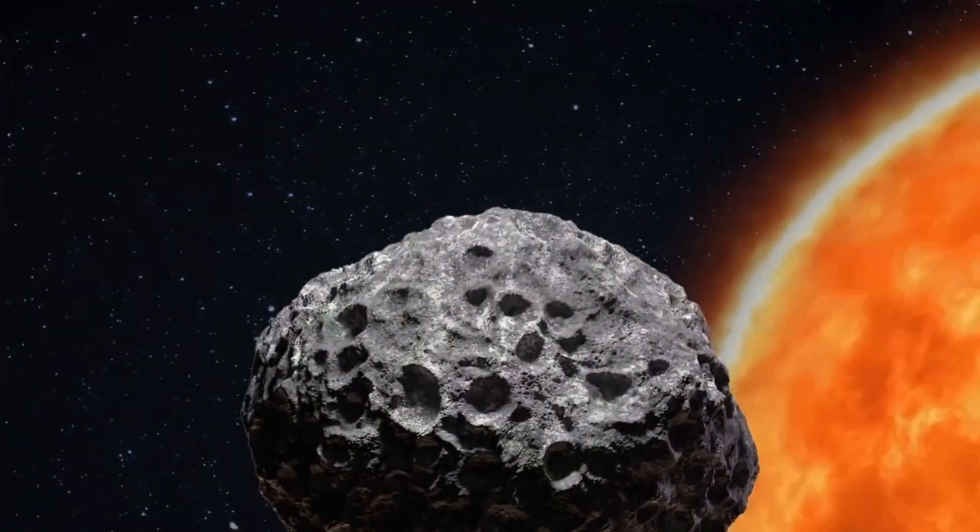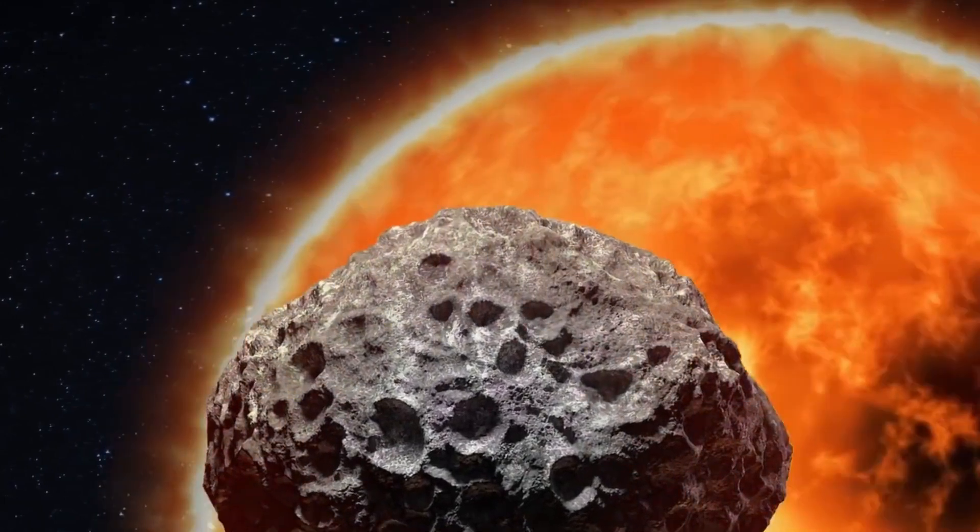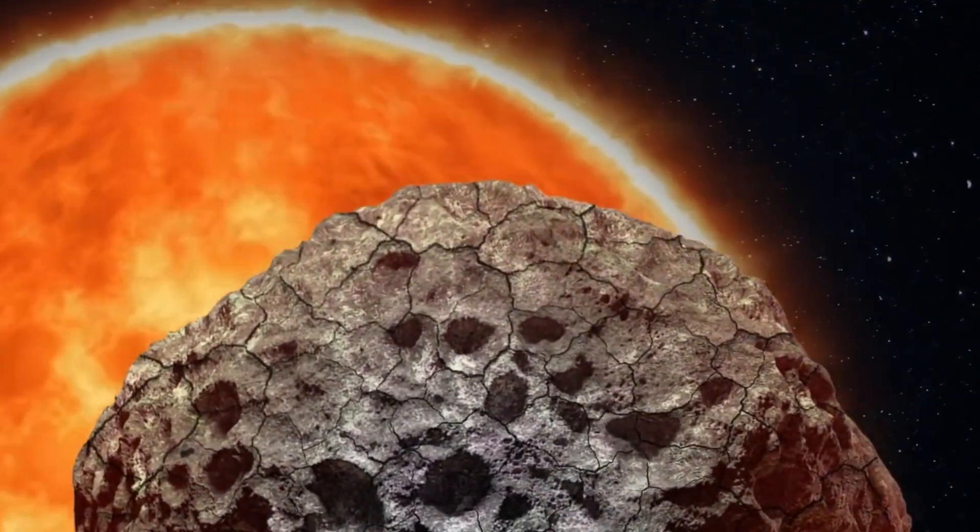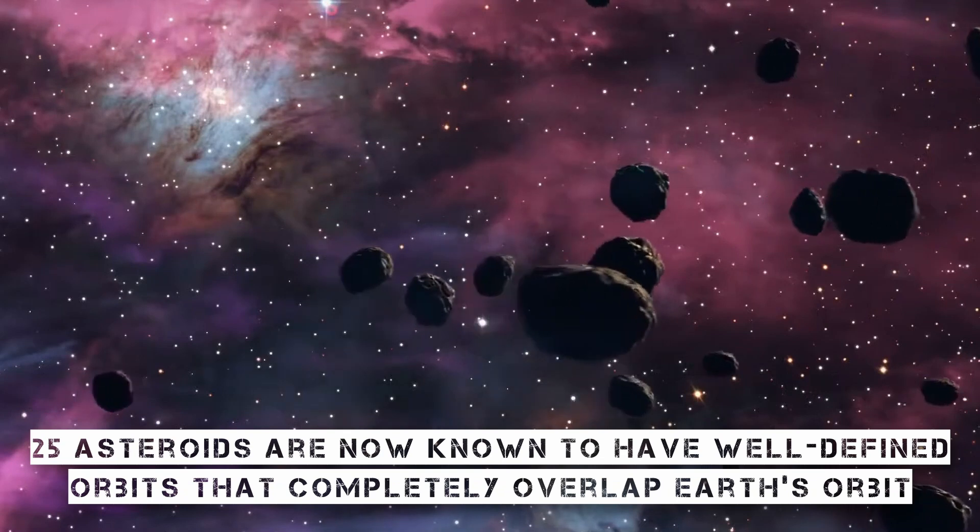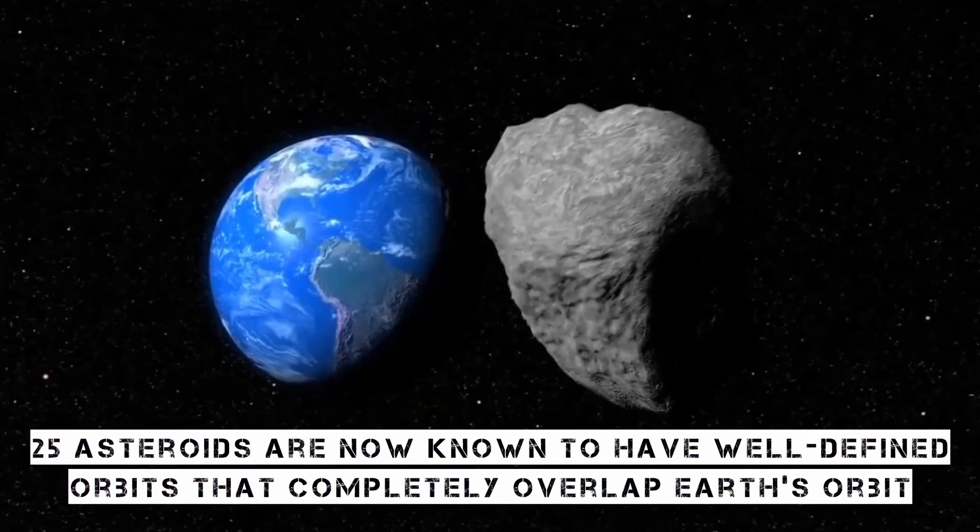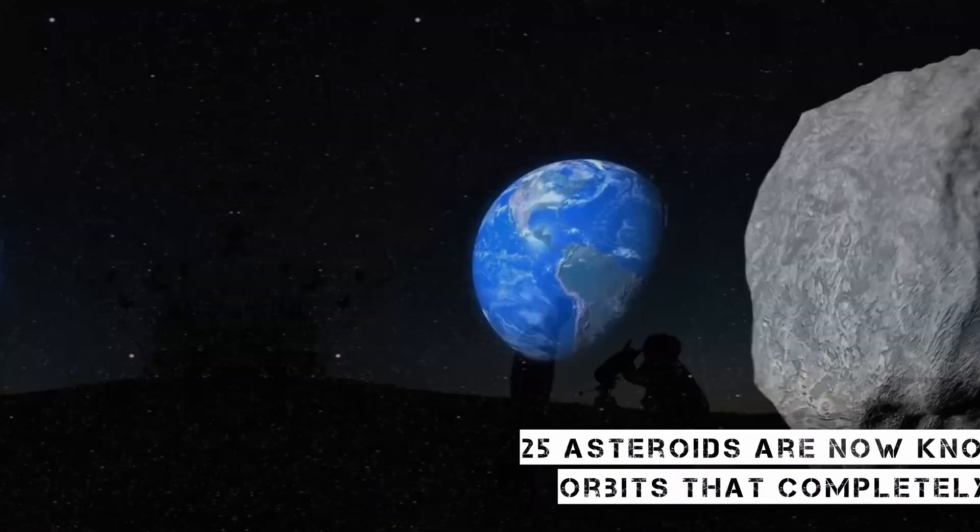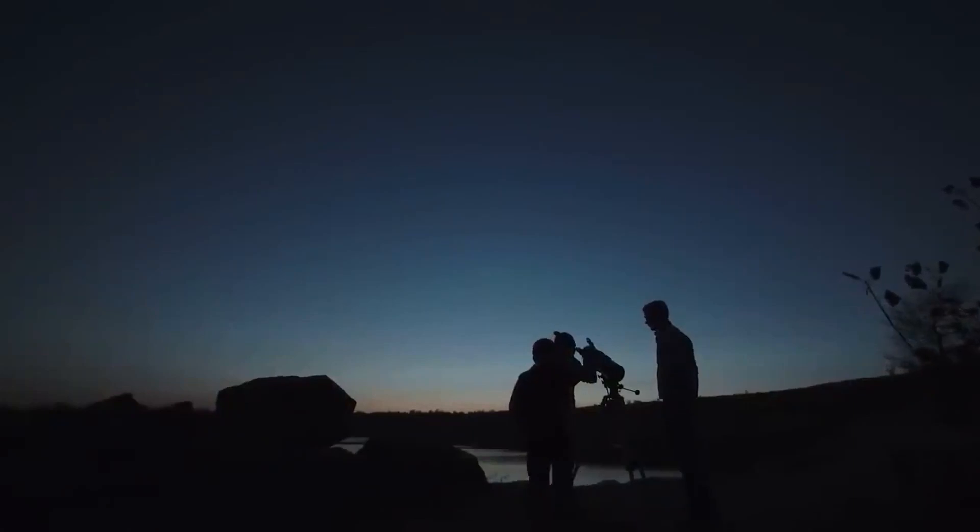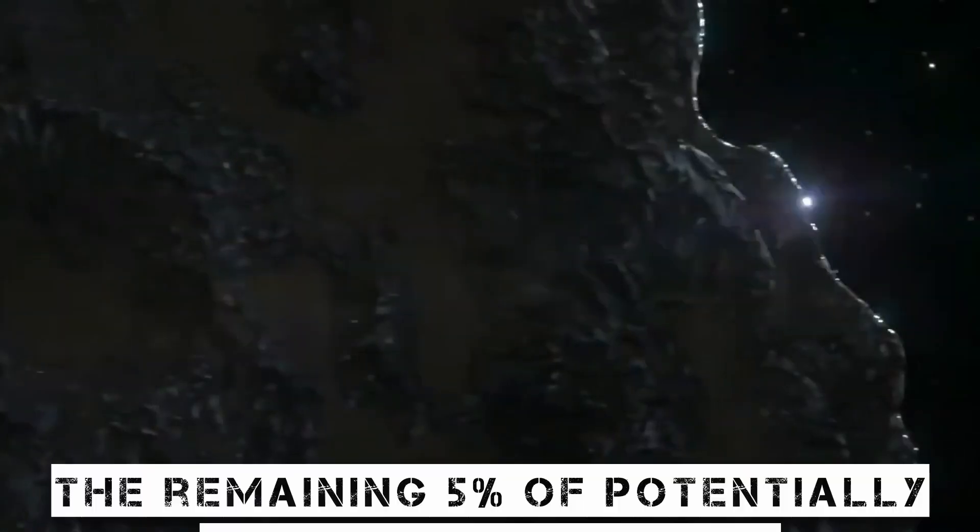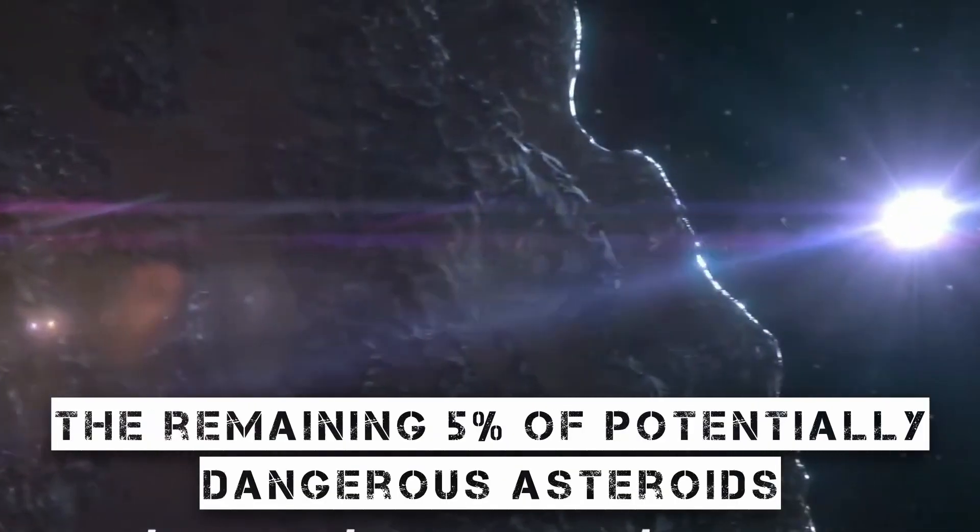Only roughly 25 asteroids are known to have well-defined orbits that completely overlap Earth's orbit. There will probably be more found, and these could make up a larger portion of the remaining 5% of potentially dangerous asteroids.